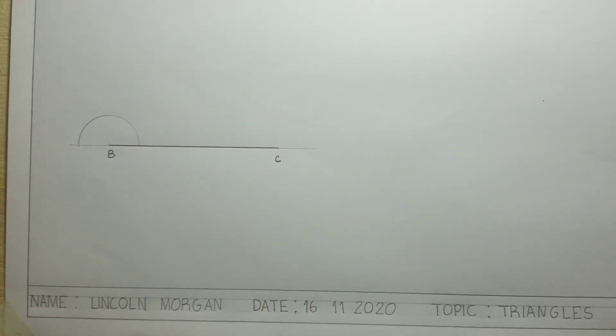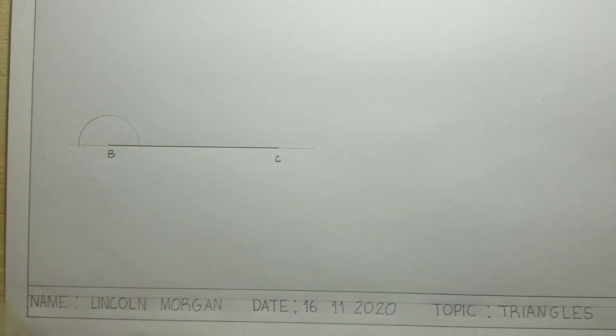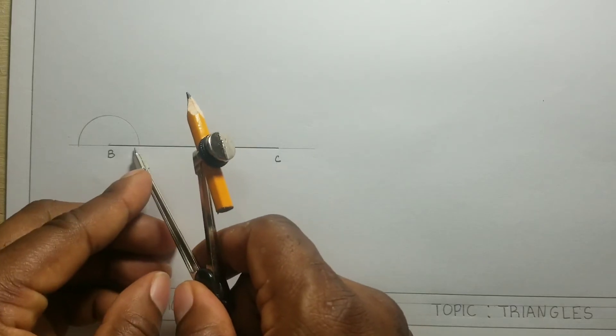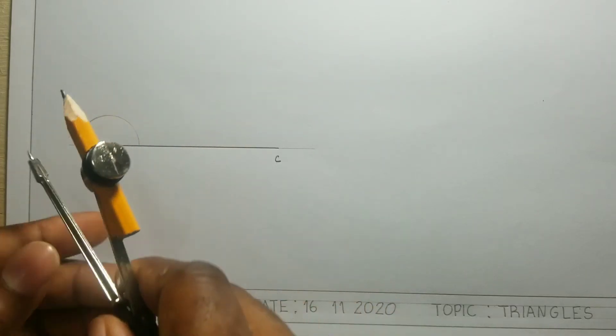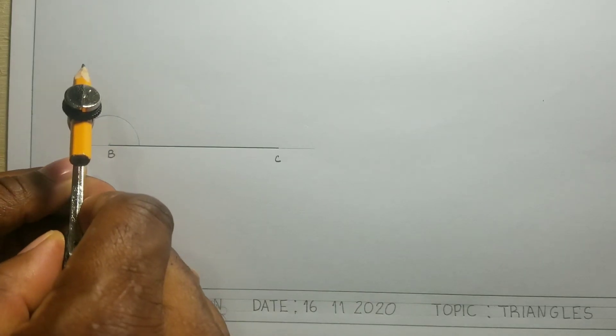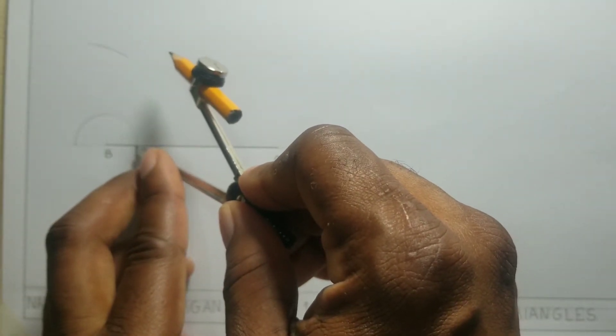Now where the semicircle intersected this line, we will open our compass just a little more and use these two points as centers. We will now scribe arcs from these two centers that will intersect each other.